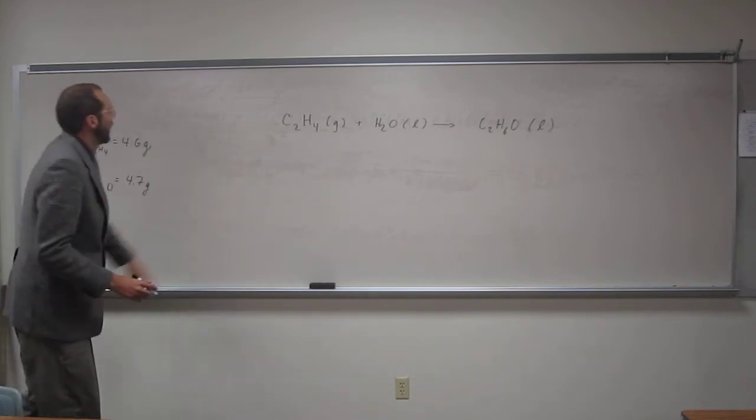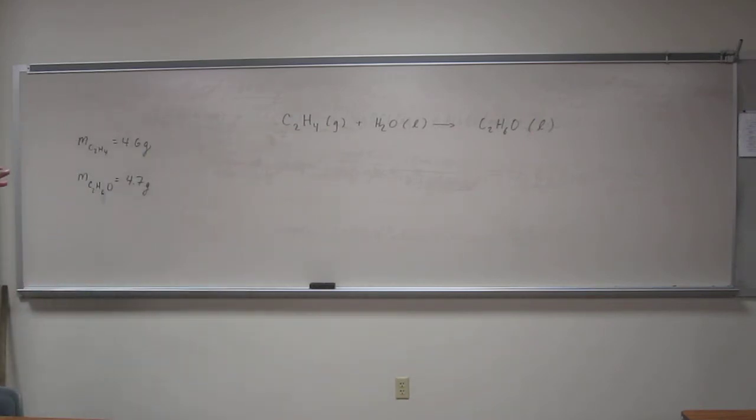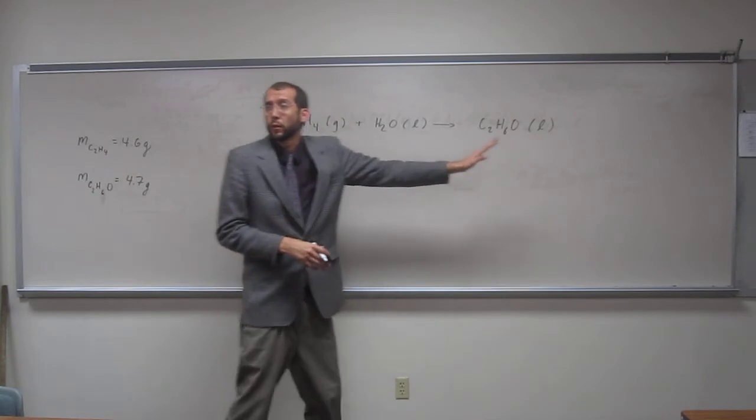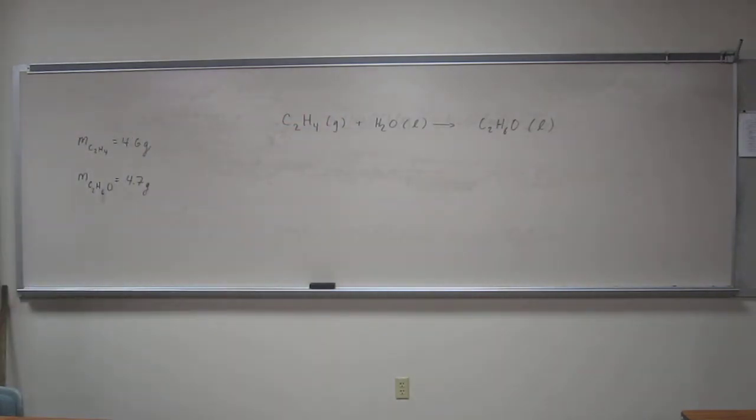Recall, percent yield is one over the other times 100. Portion over the total times 100. You may think that you're going to take one of these masses divided by the other mass and multiply it by 100. But if you do that, you forget that these two molecules weigh different amounts. You have to do it by numbers, and in chemistry, numbers is moles, so you're going to have to convert these things to moles first.